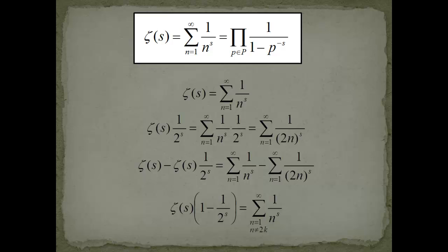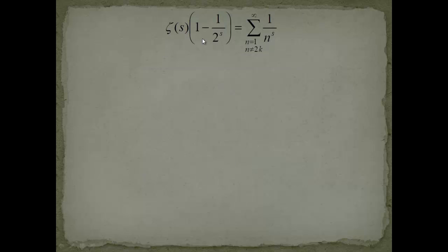And not odd I mean even numbers, so no multiples of 2 should appear here in the denominator. Now you might say okay good we have this but this stuff is a lot more. So what we have to do is we take this expression and now again divide it with something or better multiply it with 1 over 3 to the s.